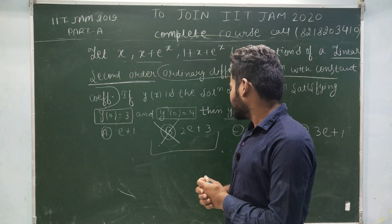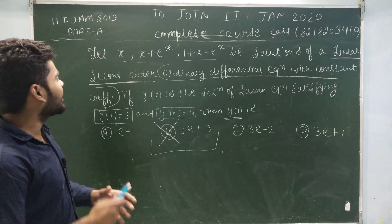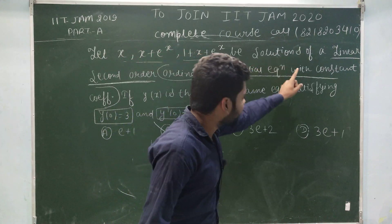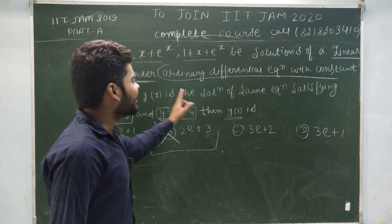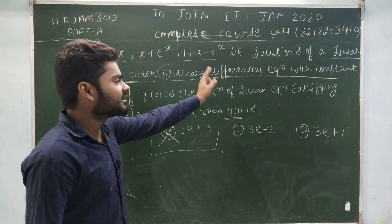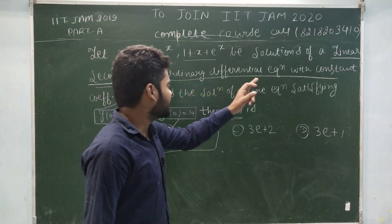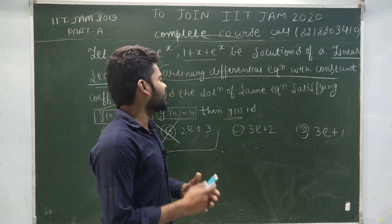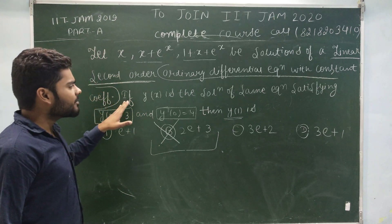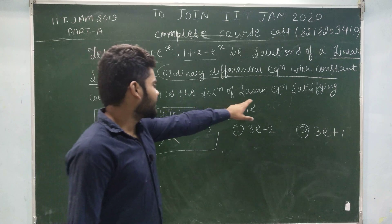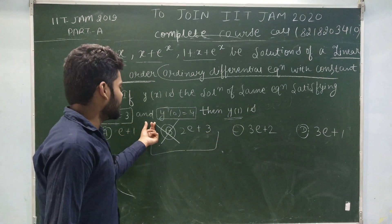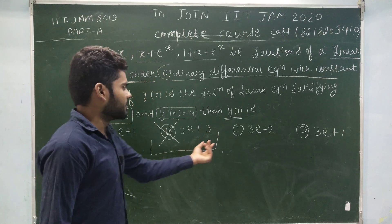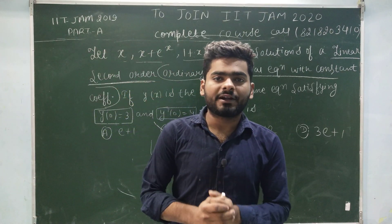Most students should take the answer 2e plus 3 — I will tell the reason why they take that option. First, read the question: Let x, x plus e^x, and 1 plus x plus e^x be solutions of a linear second order ordinary differential equation with constant coefficients. Furthermore, if y(x) is the solution of the same equation satisfying y(0) = 3 and y'(0) = 4, then y(1) is equal to — four options are given.